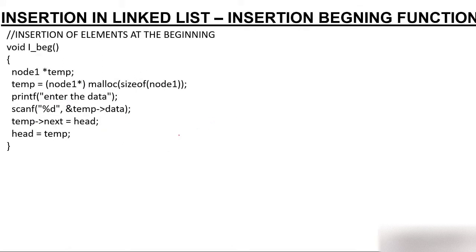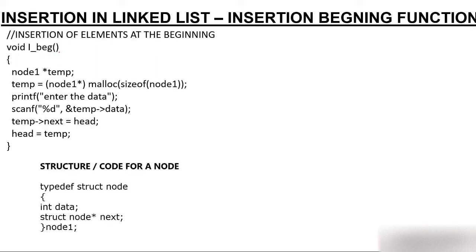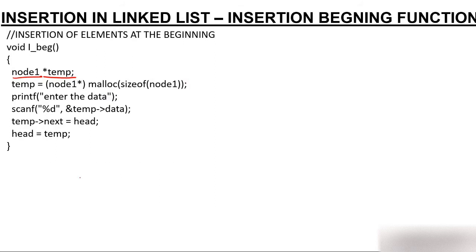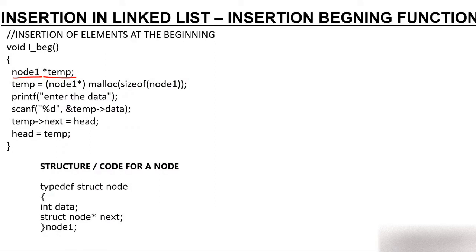The coding is very easy — no need to worry. When the insertBeg function is called, we create a pointer called temp of type node1. If you have watched the prior video you will understand why we create temp. This is the same structure we use throughout the linked list code.